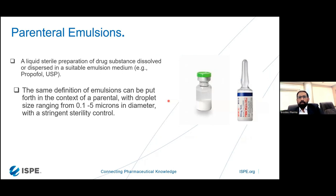Now moving to the parenteral emulsion — it's the same as a simple emulsion, but we have to take care of two aspects: sterility and globule size. Officially, it is a liquid sterile preparation of drug dissolved or dispersed in a suitable emulsion medium. For example, propofol is a worldwide-used product in this medium. The definition is the same as a regular emulsion but with droplet size ranging from 0.5 to 5 microns in diameter and stringent sterility control. These are the two key controls: globule size and sterility.